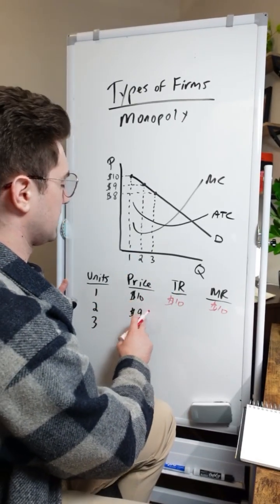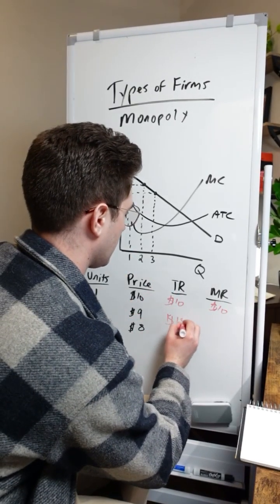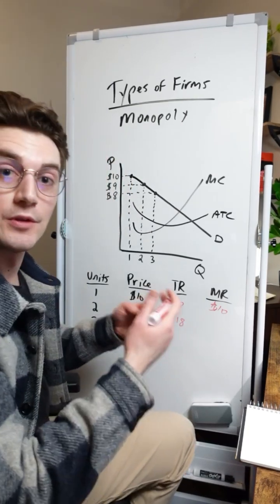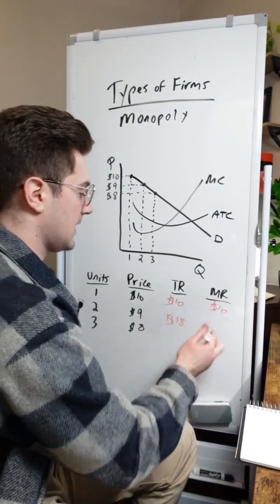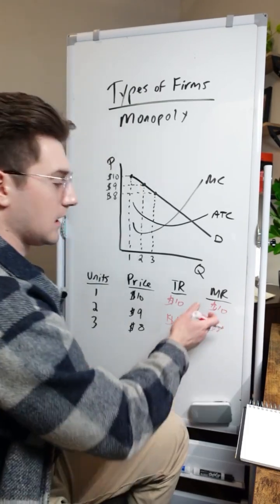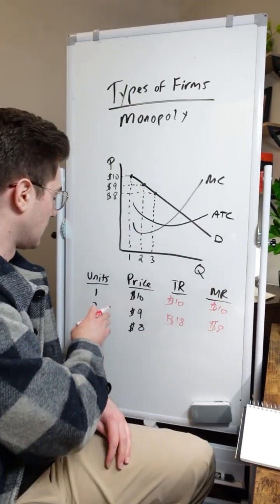For the second unit, we're selling at a price of $9 and therefore have a total revenue of 18 bucks. So to compute marginal revenue here, I'm going to say 18 minus 10 equals $8. In other words, the change in total revenue from that second unit.